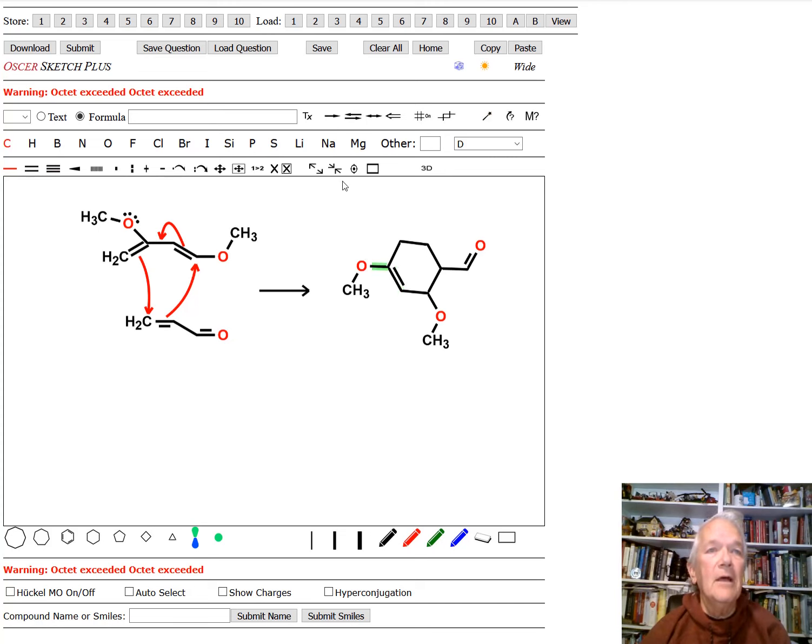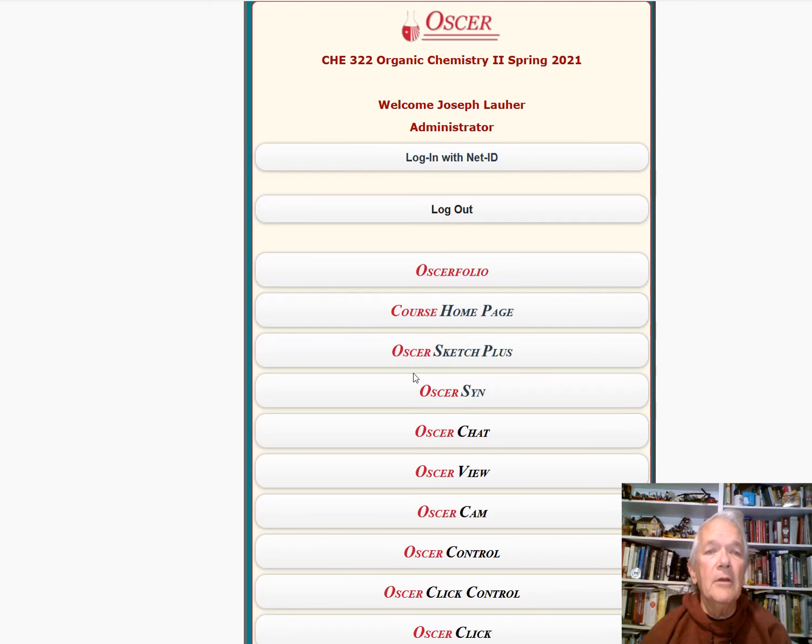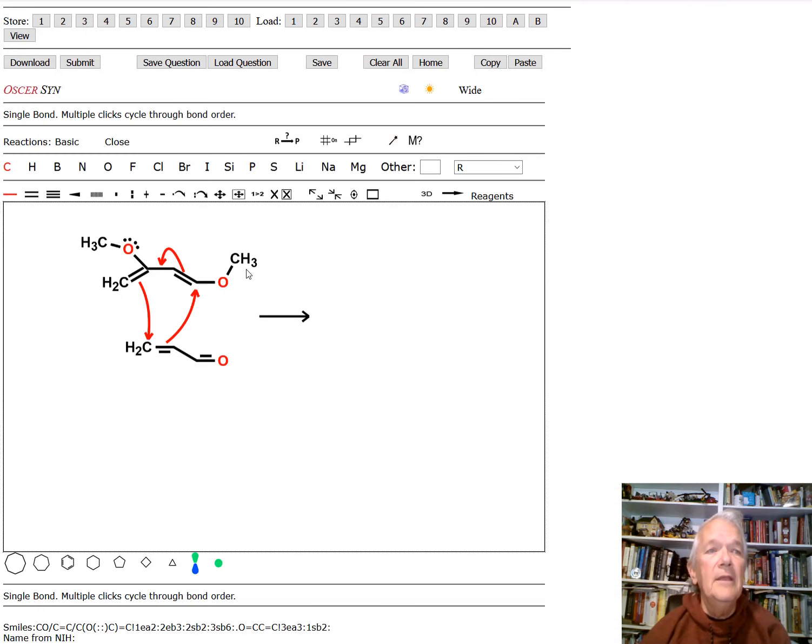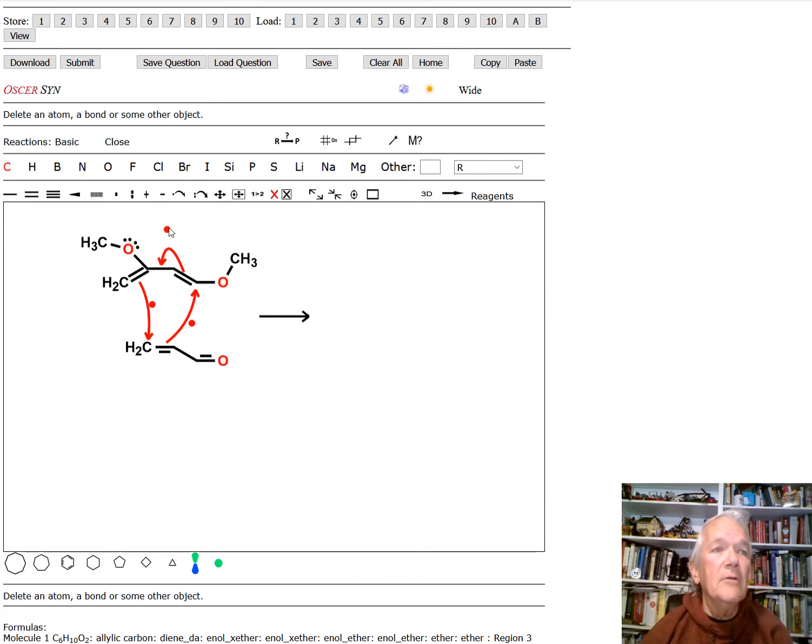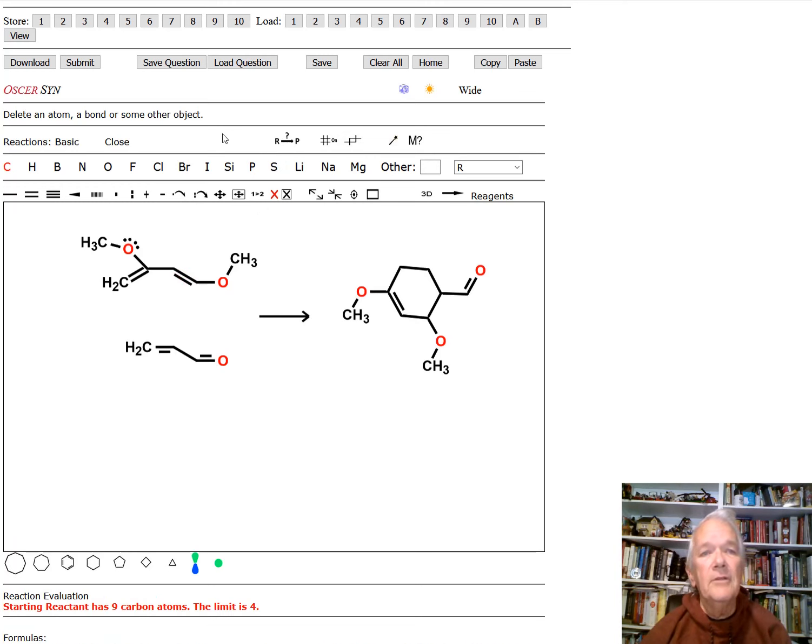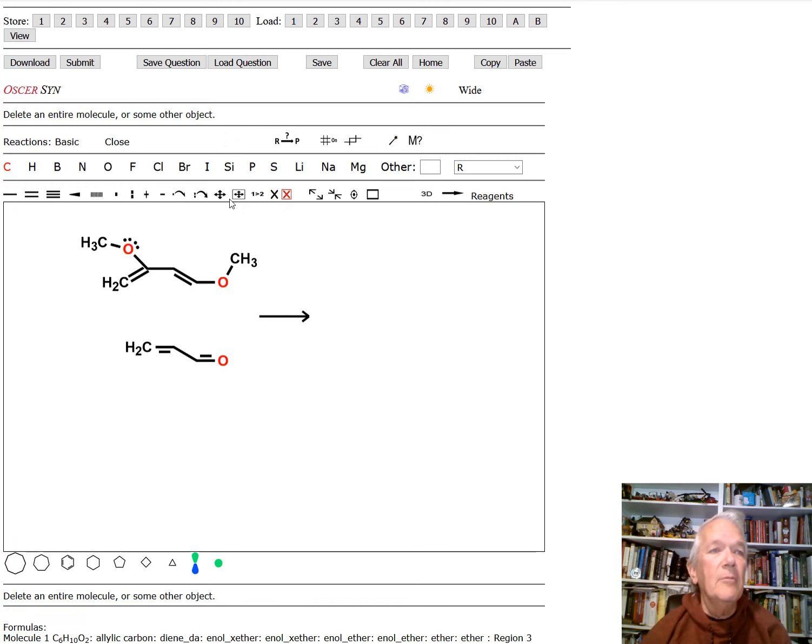Now, the fun thing about all this is that, let me just do this. If I'm going to save the structure, I'm going to go home, and I'm going to go to Oscar Sin, and now what I'm going to do, I'm going to erase the arrows because Oscar Sin knows how to do this reaction without the arrows. See, there's the same product. We didn't have to draw the arrows. Let me draw some other combinations.